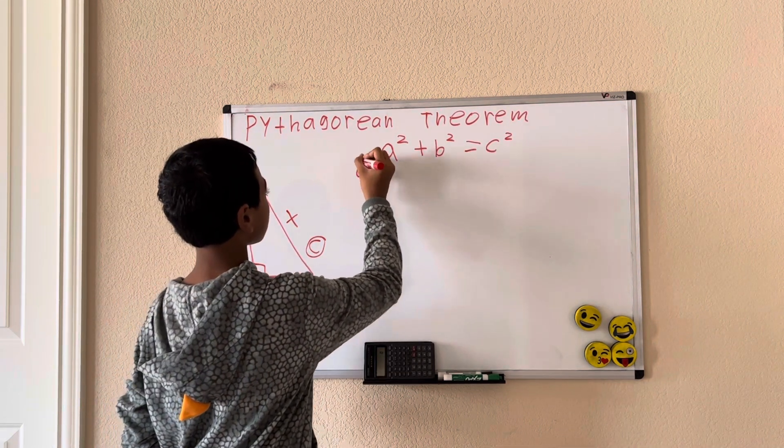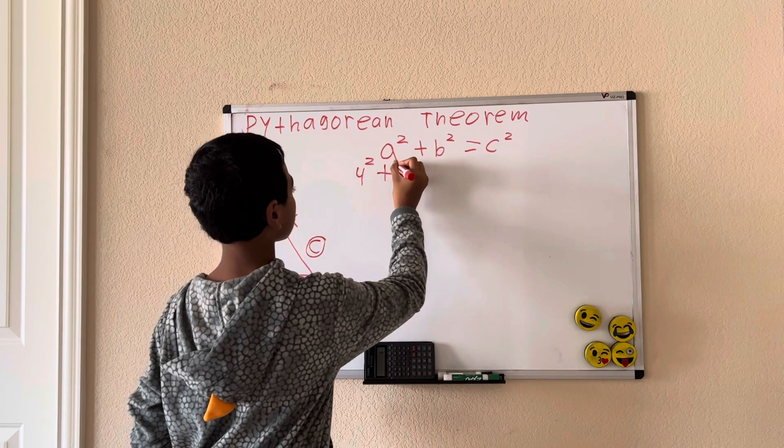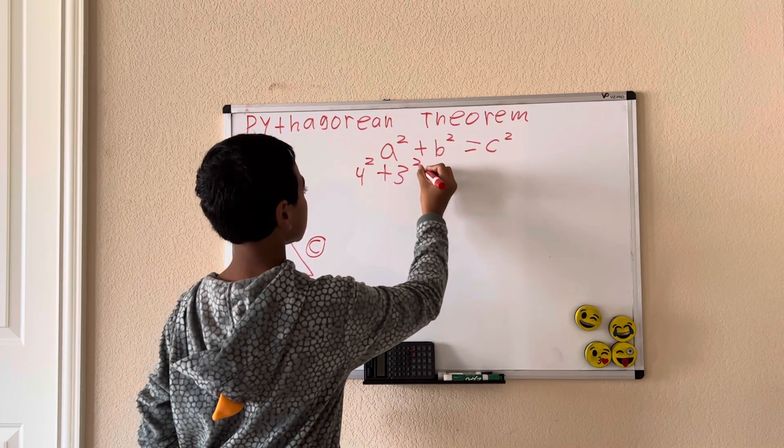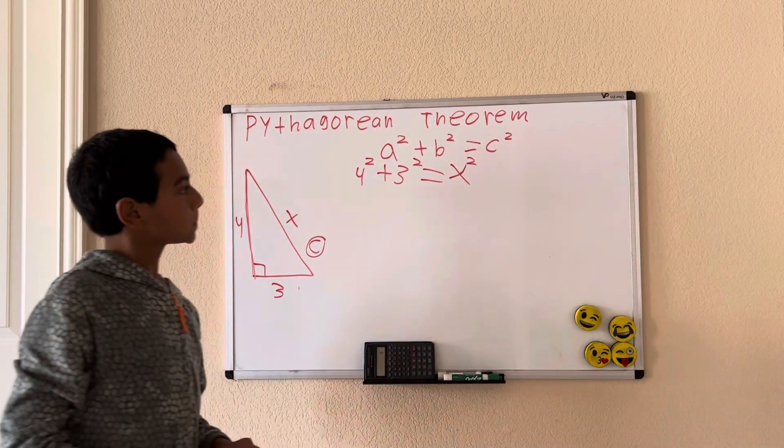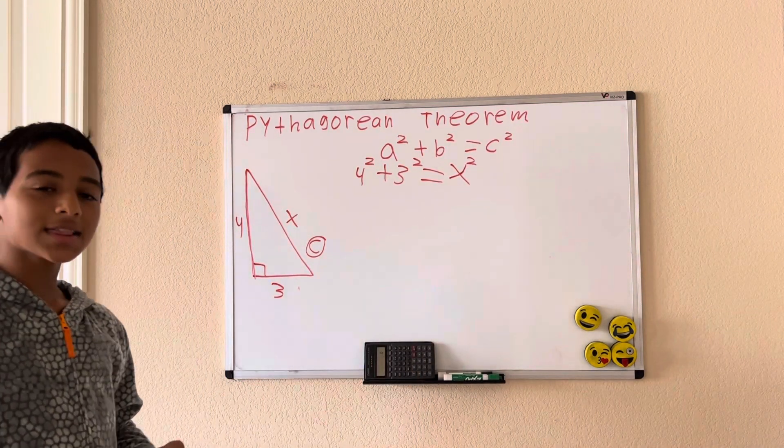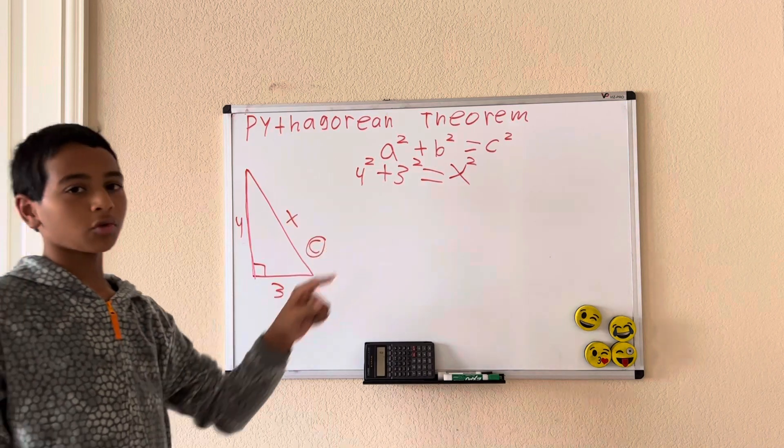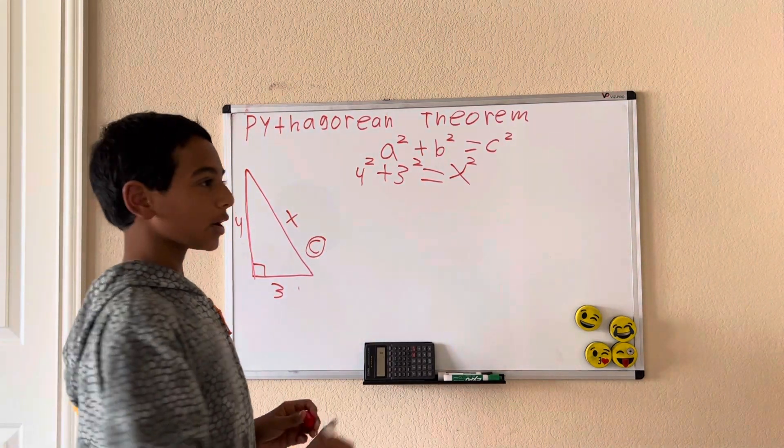So we're going to have 4² + 3² = X². Let's simplify now that we got the formula.